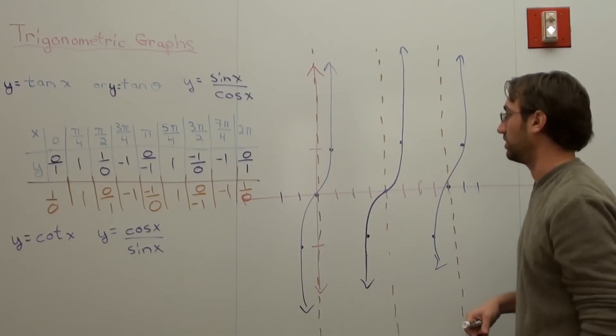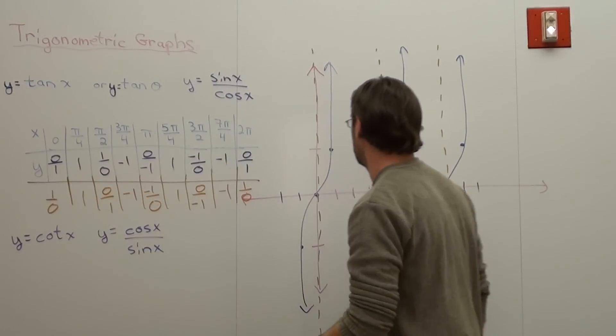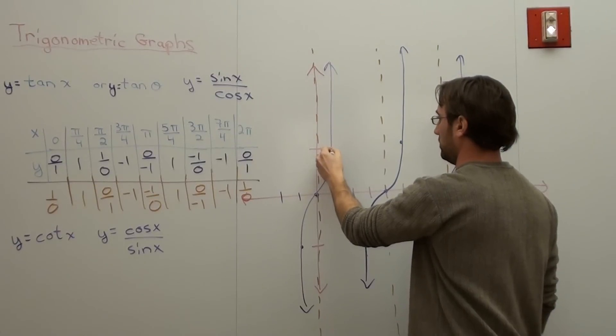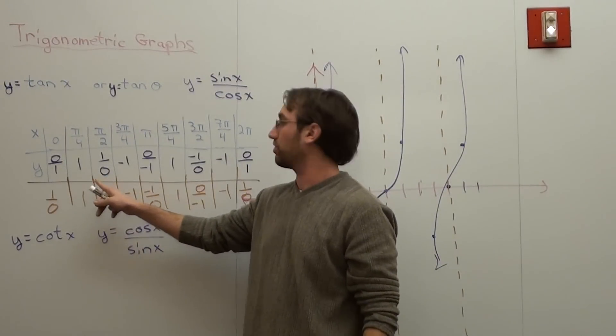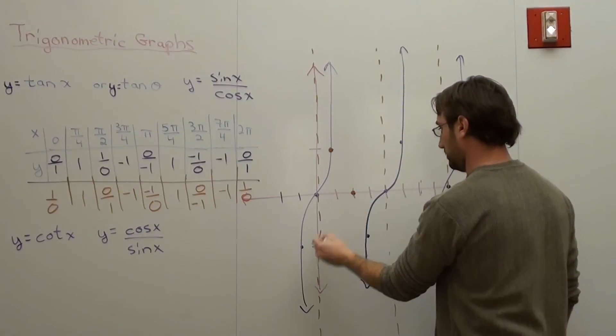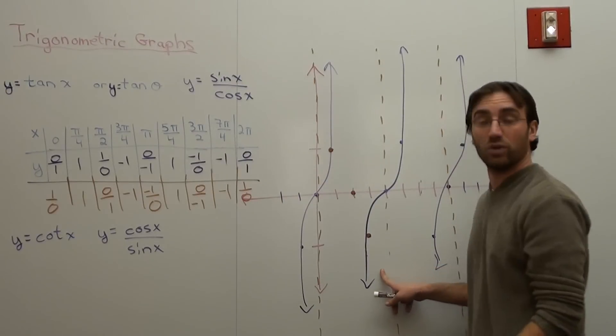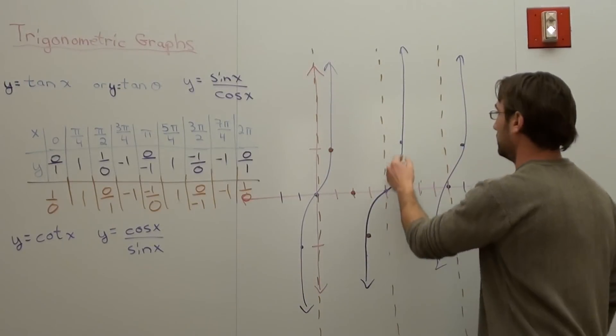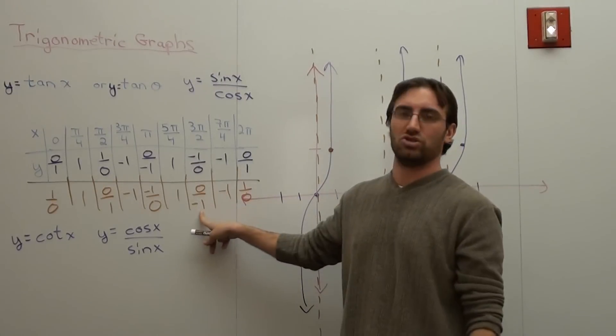You could look at the table too if you'd like to. So at pi over 4, it's 1. At 2 pi over 4, or pi over 2, it's 0. And then this one goes to negative 1. And then it's undefined at 4 pi over 4, or pi. At 5 pi over 4, it's 1. I'm going to take a guess that's 0 at 6 pi over 4. Yes!